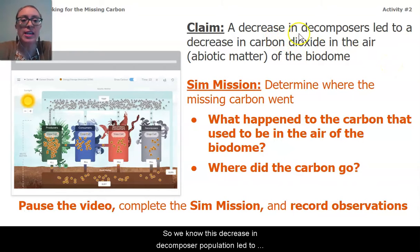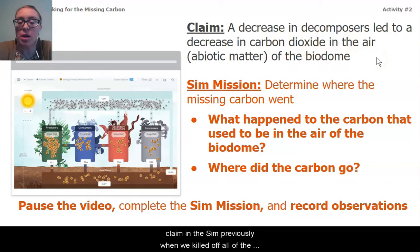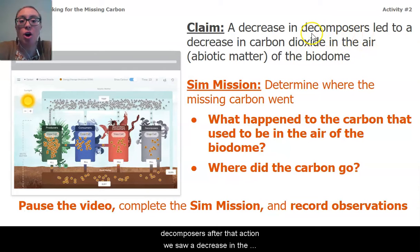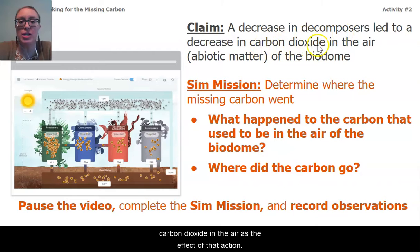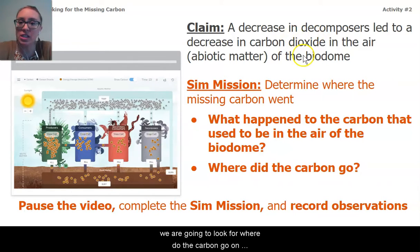We know this decrease in decomposer population led to the decrease in carbon dioxide, and we've tested this claim in the sim previously. When we killed off all of the decomposers, we saw a decrease in the carbon dioxide in the air as the effect of that action. We've already gathered that evidence.